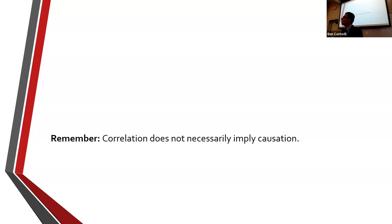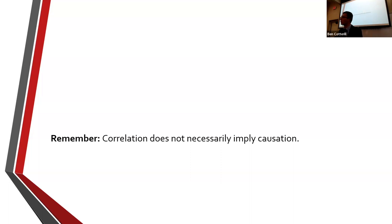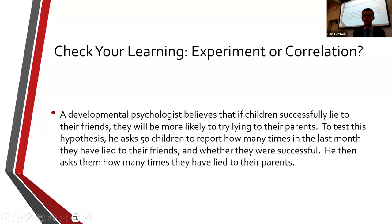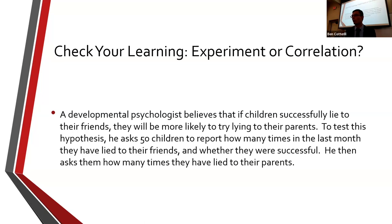In other cases, it may be pretty clear that two things are related, but we still don't know which is causing the effect on the other — as with anxiety and happiness. To check your learning: a developmental psychologist believes that if children successfully lie to their friends, they'll be more likely to try lying to their parents. The researcher asks 50 children how many times last month they lied to friends and how many times to their parents. Is this a correlation or an experiment? It's a correlation — we're seeing if there's a relationship as one variable goes up, does the other go up?